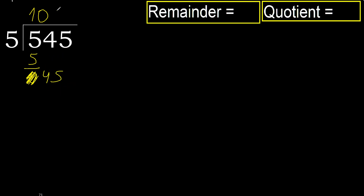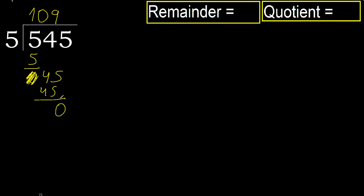5 multiplied by 9 is 45. 45 is not greater — ok. 45 minus 45 equals 0. Next — that is not a number, therefore finish it.